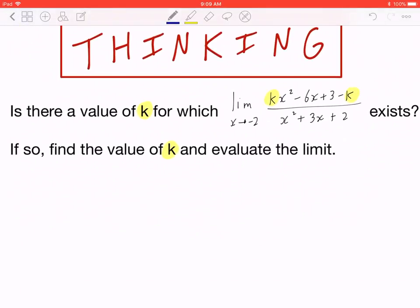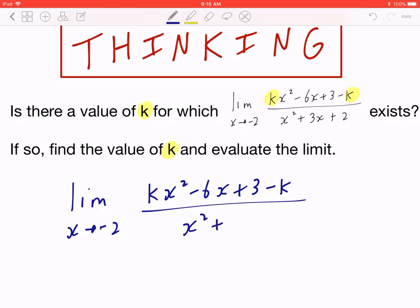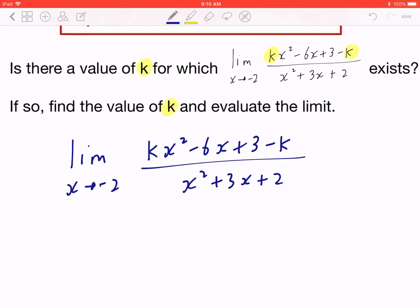So now we start with step 1. We copy the limit. So again, you take the limit as x is approaching -2 of kx² - 6x + 3 - k all over x² + 3x + 2. If the limit does exist, that means you can evaluate this. And if you look at the denominator, you can factor it.